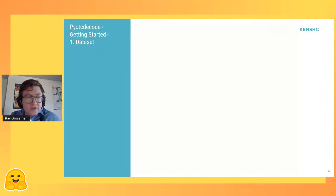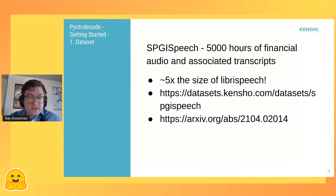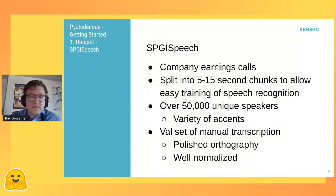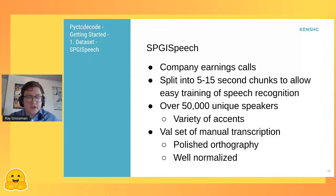For this talk and as a dataset recommendation, we use SPGI Speech — a bit of self-promotion, but this dataset is great. It's about 5,000 hours of financial audio and associated transcripts — about five times LibriSpeech, which has been the main speech-to-text dataset in research for the past decade. It consists of company earnings calls split into short chunks for easy speech recognition training. It contains over 50,000 unique speakers with a variety of accents and speaking conditions. The entire train and validation set are the result of manual transcription, giving it very polished orthography.